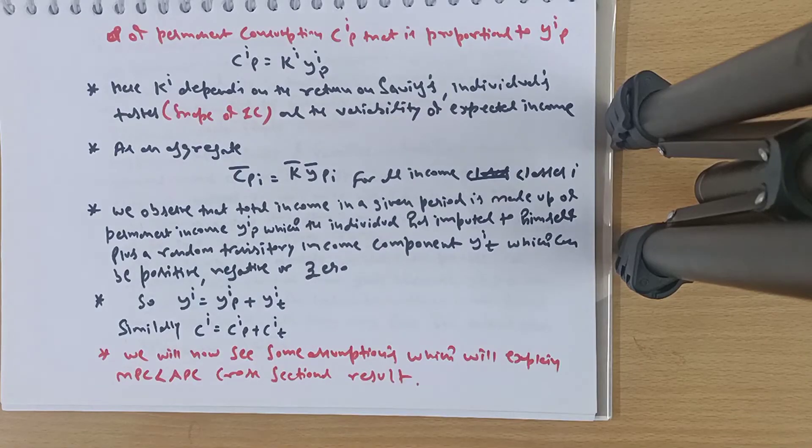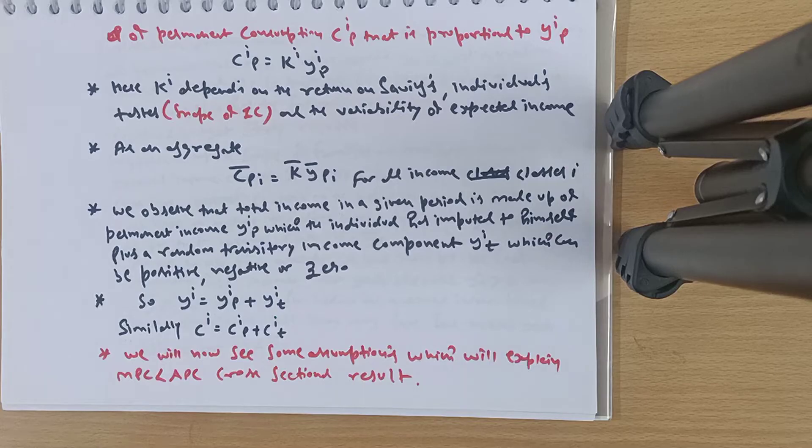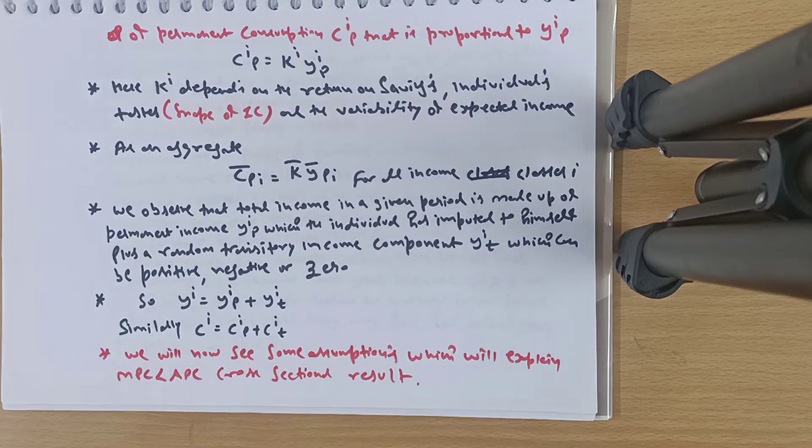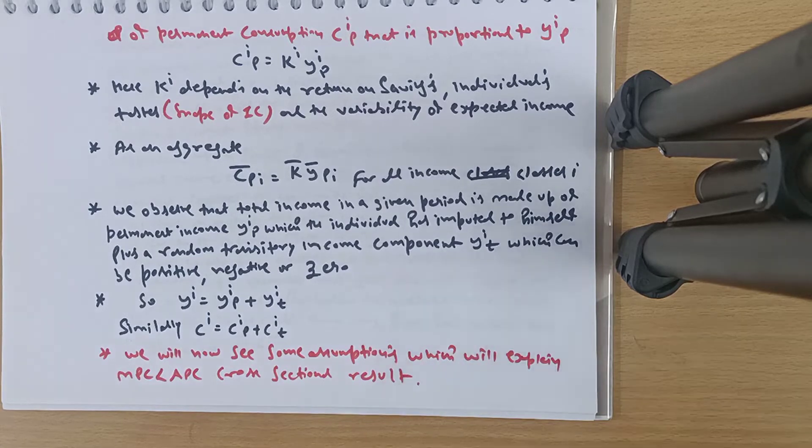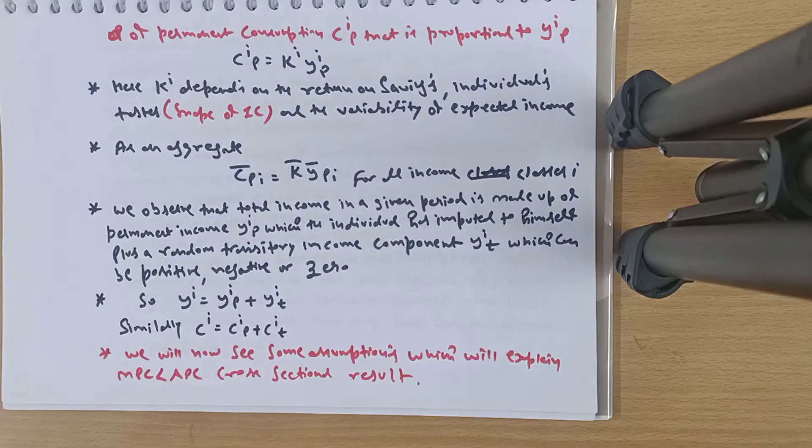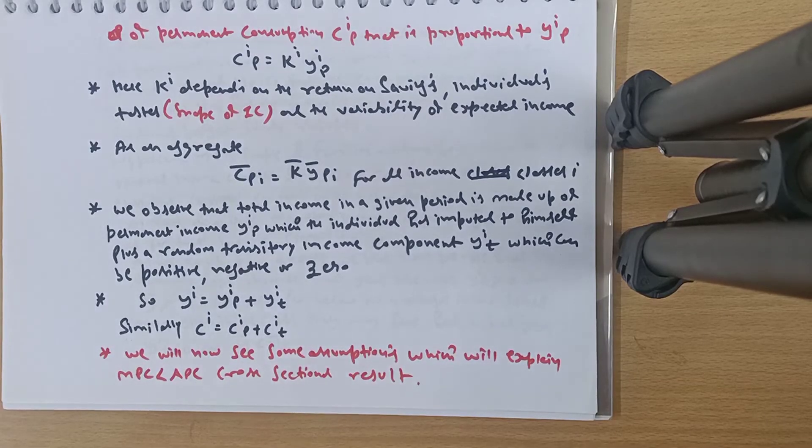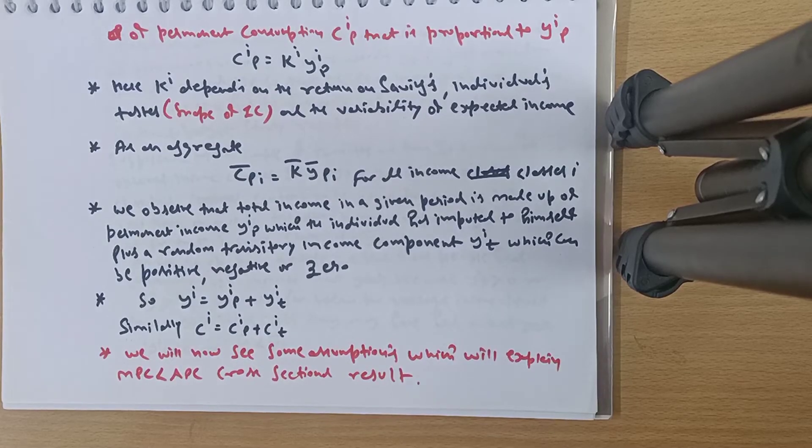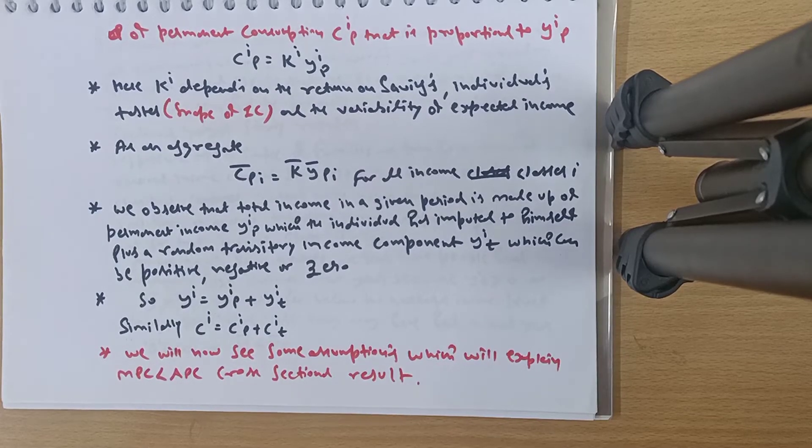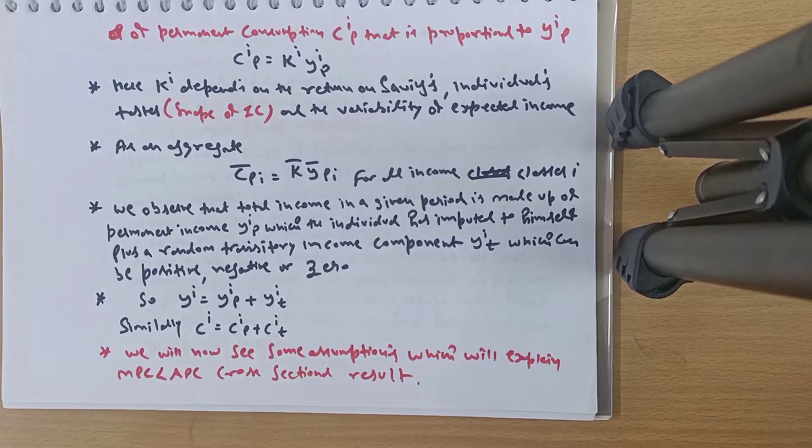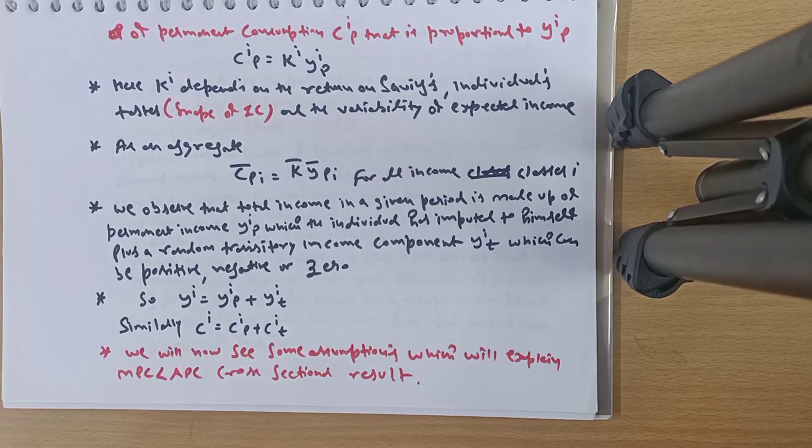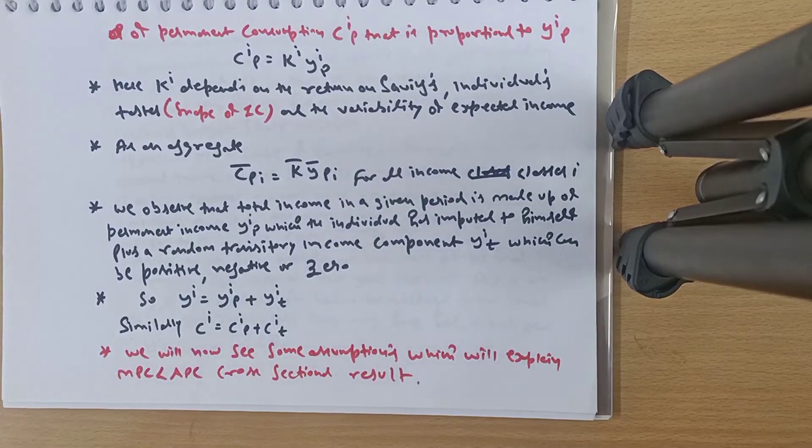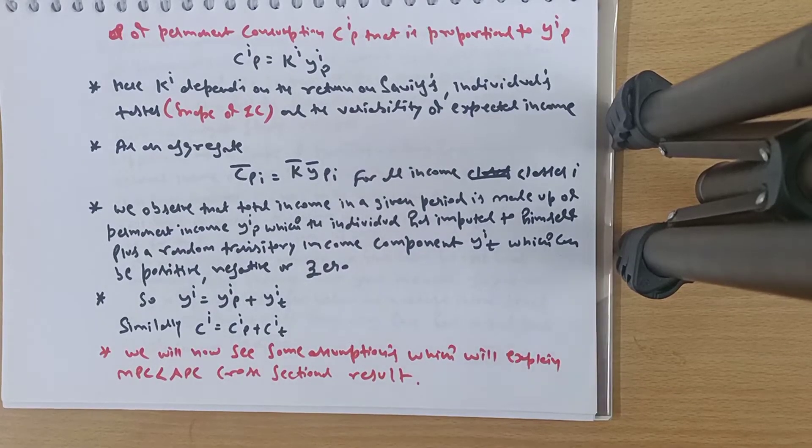We observe that total income in a given period is made up of permanent income, which the individual has imputed to himself, plus a random transitory income component Yit, which can be positive, negative, or zero. Let me explain this in story form. Suppose as an individual you believe your permanent income is 10,000 rupees. In some years you earn 13,000, in others you earn 9,000. For example, during the corona problem, medical workers had exceptional gains while the general public suffered losses.